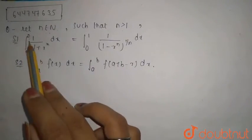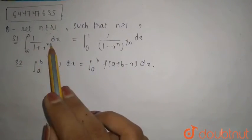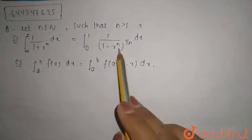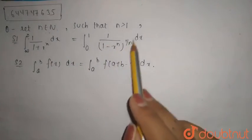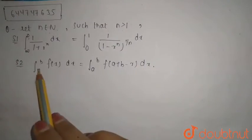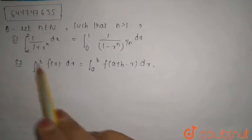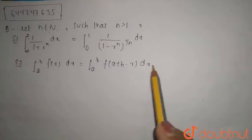Statement 1 says that integration infinity to 0, 1 upon 1 plus x to the power n dx is equal to integration 0 to 1, 1 upon 1 minus x to the power n by n dx. And statement 2 says that integration a to b f(x) dx is equal to integration a to b f(a + b - x) dx.